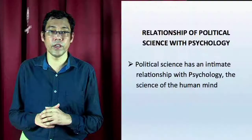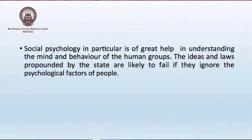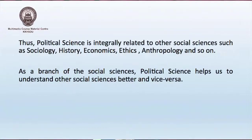Let us discuss the relationship of political science with psychology. Political science has an intimate relationship with psychology, the science of the human mind. Social psychology, in particular, is of great help in understanding the mind and behavior of human groups. The ideas and laws propounded by the state are likely to fail if they ignore the psychological factors of people. Thus, political science is integrally related to other social sciences such as sociology, history, economics, ethics, anthropology and so on. Political science helps us to understand other social sciences better and vice versa.